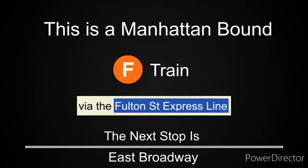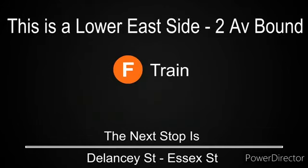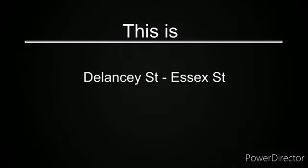This is a Manhattan-bound F-train via the Fulton Street Express line. The next stop is East Broadway. This is a Lower East Side 2nd Avenue-bound F-train. The next stop is Delancey Street, Essex Street. This is Delancey Street, Essex Street.